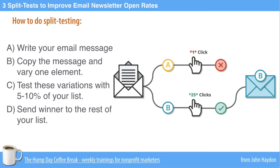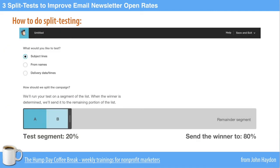There's a great graphic here where you're testing different elements. Let's say subject line A versus subject line B. Subject line A got one click from the sample group, that small percent. But B received a lot more clicks, so B is the winner. We're going to send out B to the rest of the list.